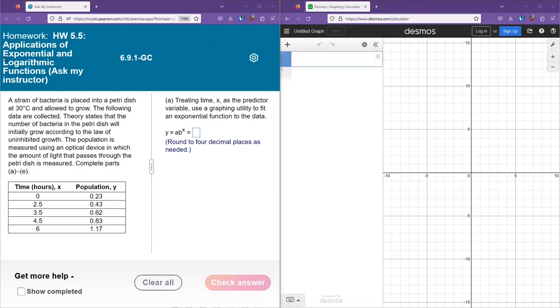In this question, we're working on a problem related to exponential growth and decay, and we're given a set of data which we'd like to model in an exponential format. A strain of bacteria is placed in a petri dish at 30 degrees Celsius and is allowed to grow. The following data is collected.